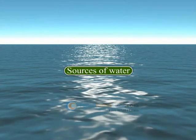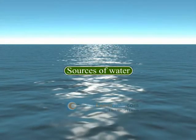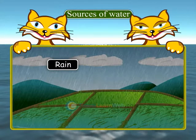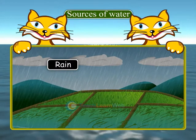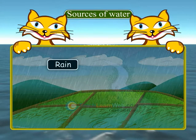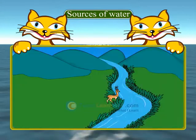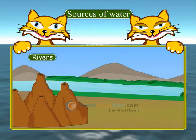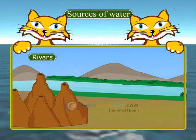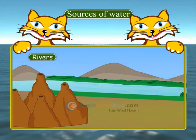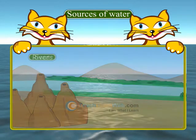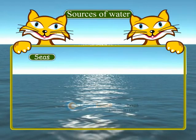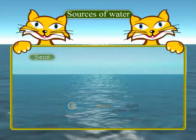Sources of Water. The main source of water is rain. Rainwater flows into rivers, seas, and oceans.